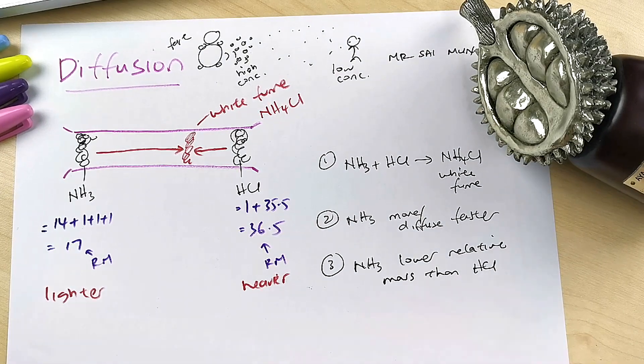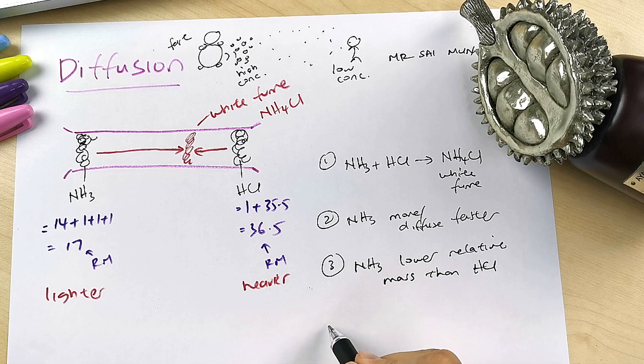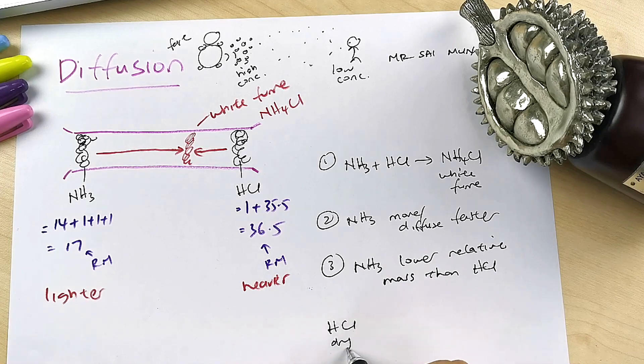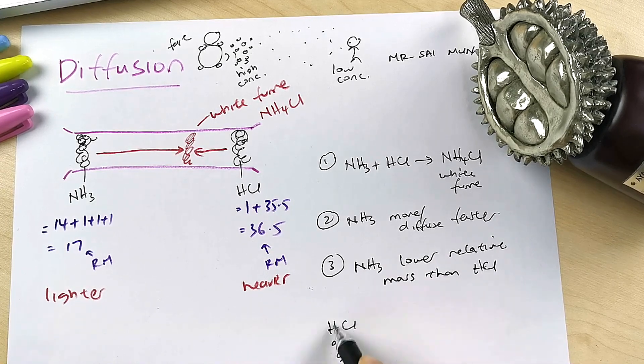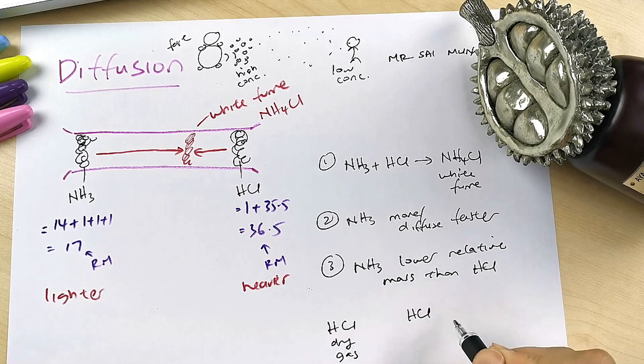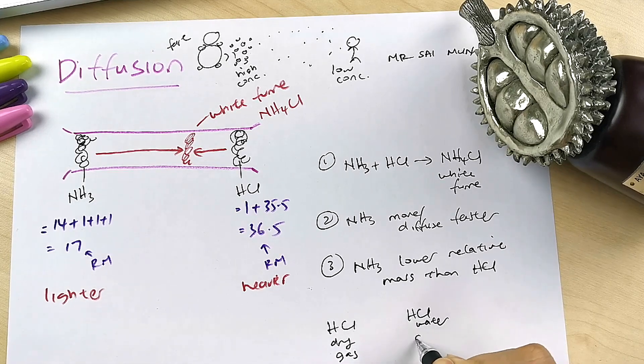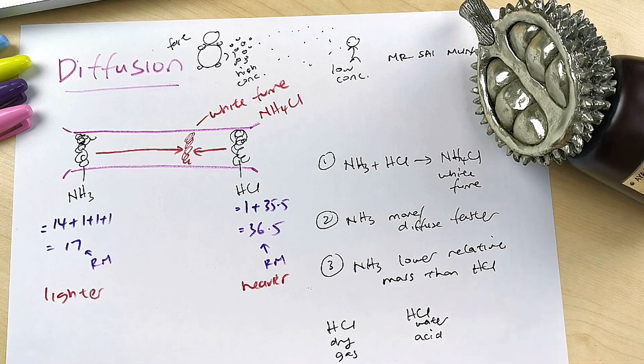A bit more: if they ask why is this hydrogen chloride and not hydrochloric acid? Because hydrogen chloride when it's dry is a gas, but hydrogen chloride when you have water, when you add water to it, it becomes hydrochloric acid.